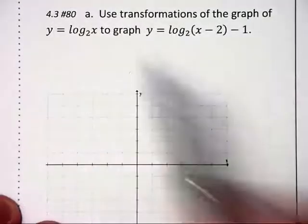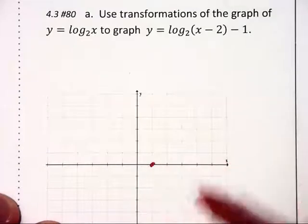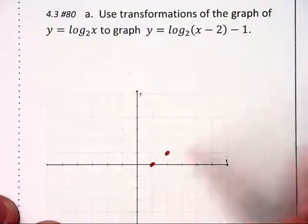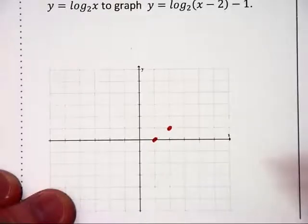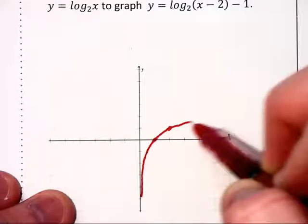Okay, let's try another transformation problem. Here we begin with y equals log base 2 of x, which goes through a base point of 1, 0, and it also goes through 2, 1. And it has this vertical asymptote on the y-axis.